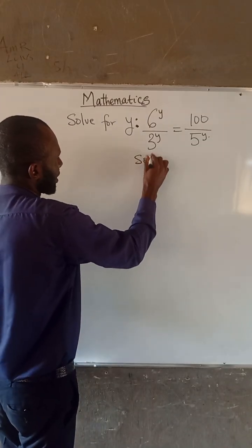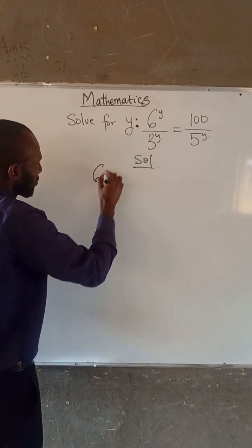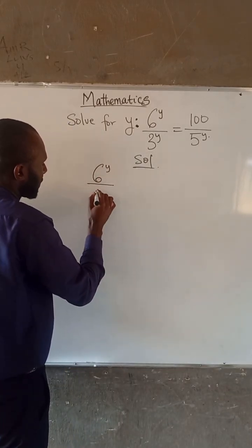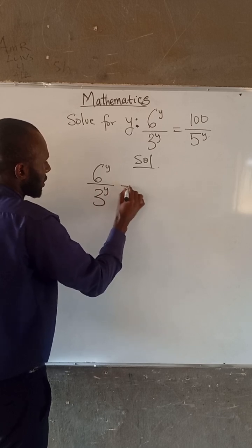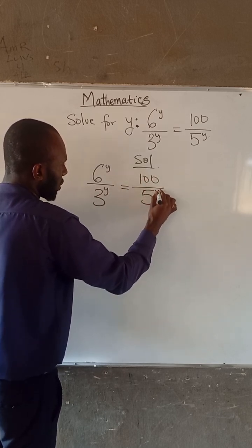This is an interesting equation. We are given that 6 to the power of Y divided by 3 to the power of Y is equal to 100 divided by 5 to the power of Y.